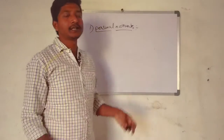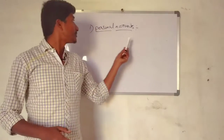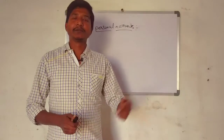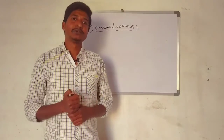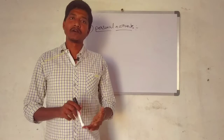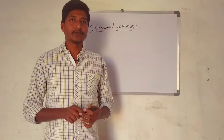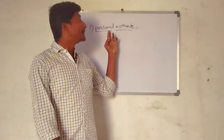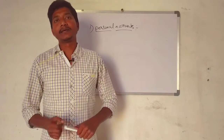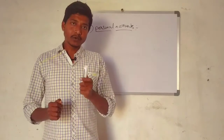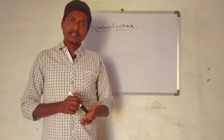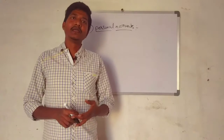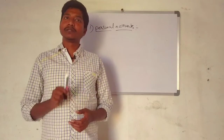Starting with personal accounts — a personal account is related to the name of a person. Personal accounts can be of different types. They include natural persons and artificial persons, such as companies and other artificial body forms.